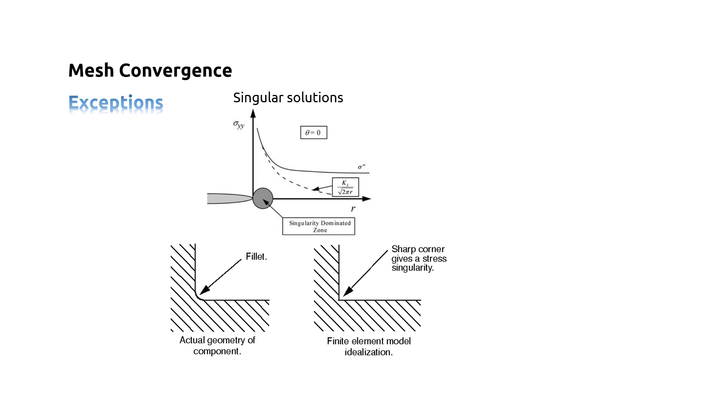Typical situations where stress singularities occur are the appliance of a point load, sharp re-entrant corners, corners of bodies, and contact and point restraints.